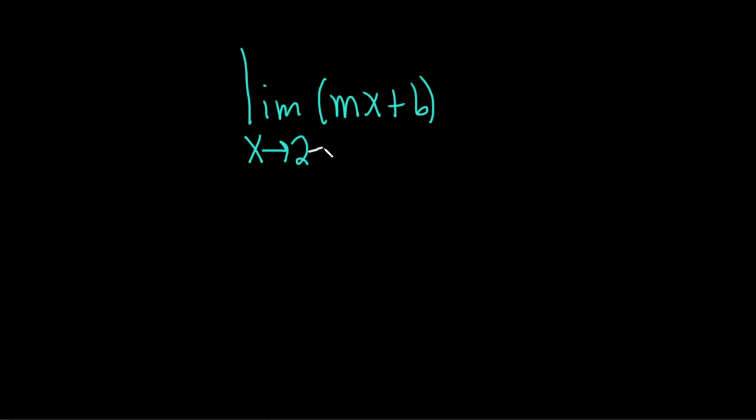We're just going to take the 2 and put it where the x is. Recall that when you do that, you stop writing the limit sign. So this is m times 2 plus b.